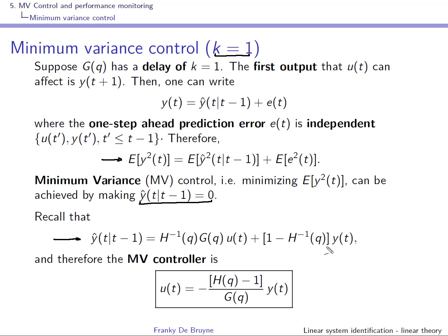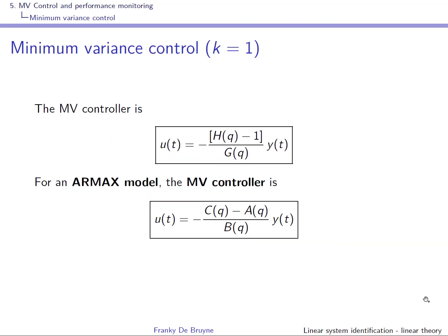You can make the one-step-ahead prediction zero by a controller that acts on Y, simply taking this transfer function divided by the other, with a minus sign. This yields the minimum variance controller. For an ARMAX model where G of Q is B of Q over A of Q and H of Q is C of Q over A of Q, you plug into this expression and find the minimum variance controller for the ARMAX system.